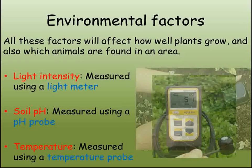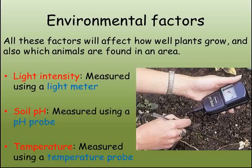Soil quality also affects plant growth, and an important factor here is pH. Most plants have a preference for how acid or alkaline the soil is, and grow best when the soil is like that. Soil pH is best measured using a pH probe that is simply put into the soil and a reading taken.